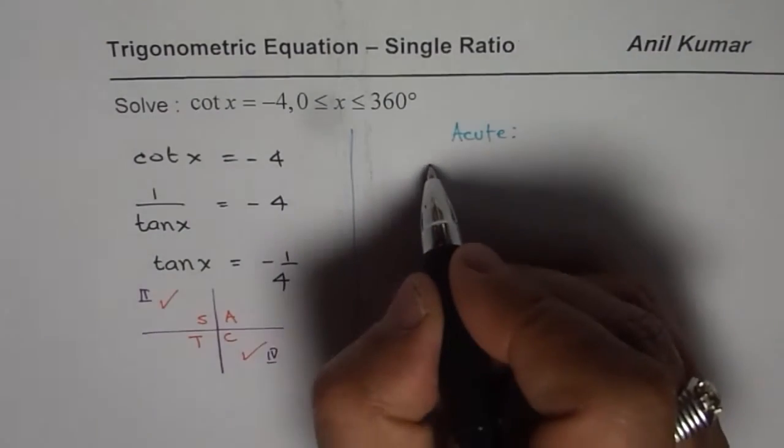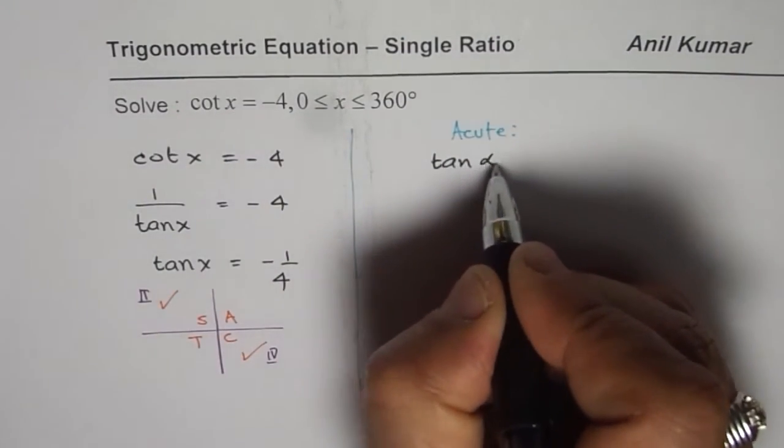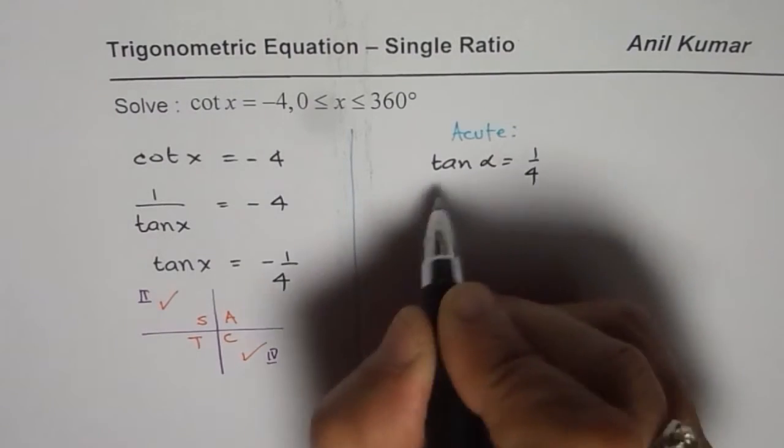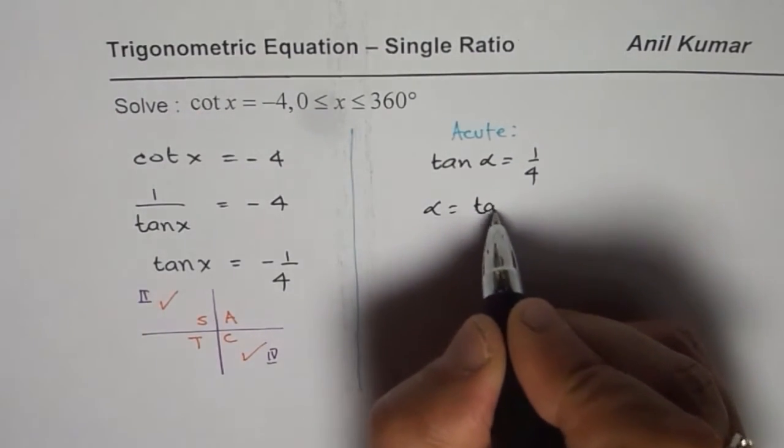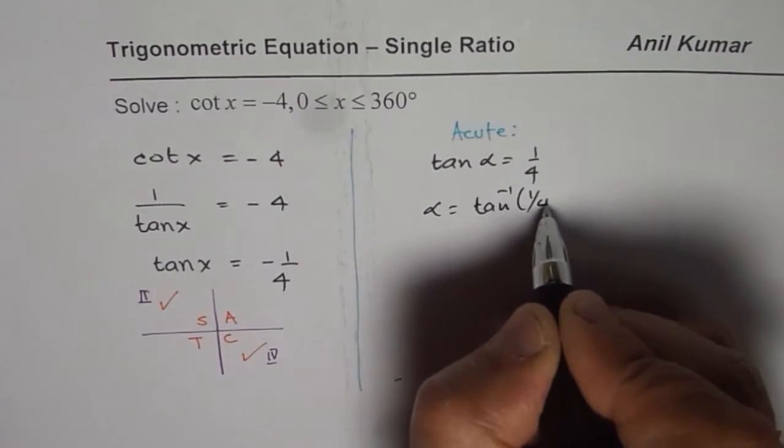So we will change the question. We will write this as tan of alpha equals to 1 over 4. So alpha equals to tan inverse of 1 over 4.